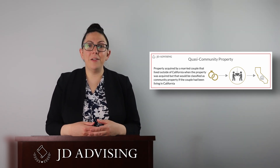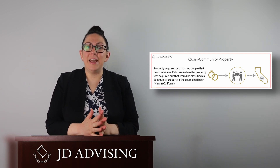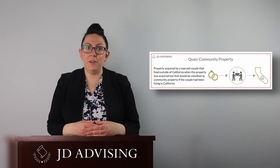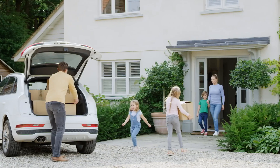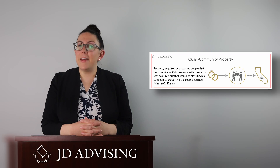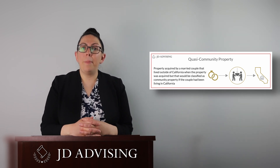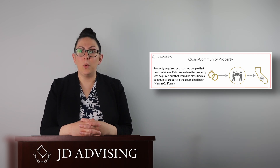Quasi-community property is another frequently tested issue on California property essays. It is property acquired by a married couple that lived outside of California when the property was acquired, but that would be classified as community property if the couple had been living in California. For example, if a couple lives in Texas, buys a house there, then moves to California and later decides to get divorced, the Texas house would be considered quasi-community property. Upon divorce, quasi-community property is treated the same as community property and divided equally unless there's a rule or agreement requiring otherwise.